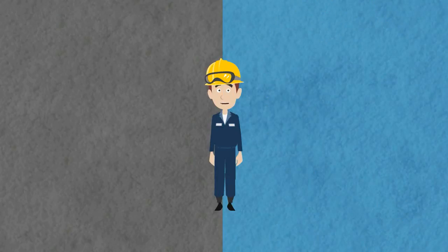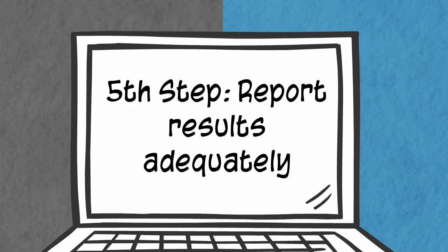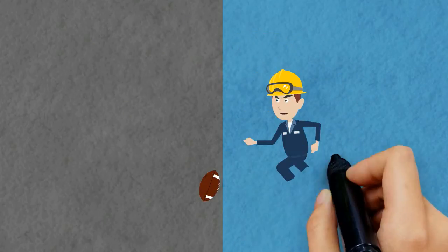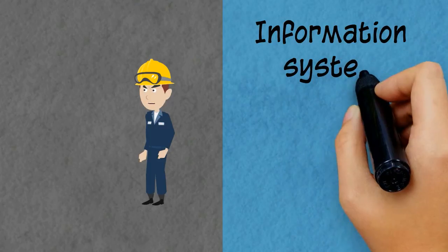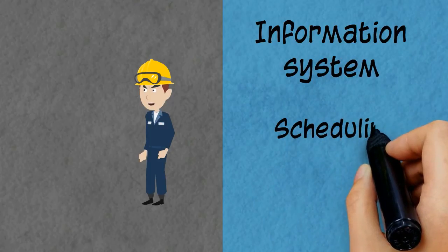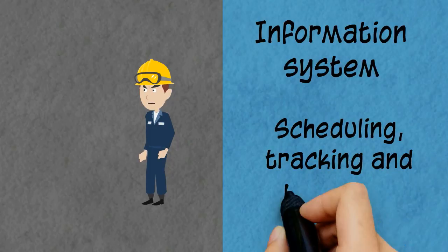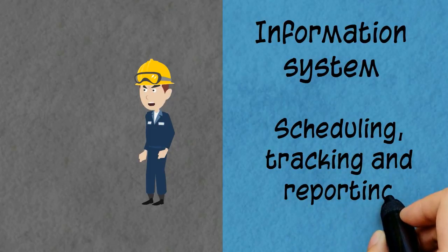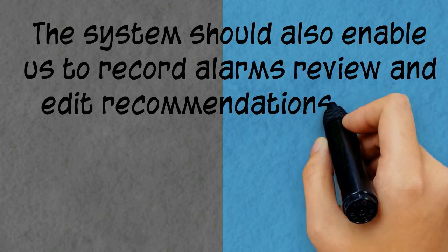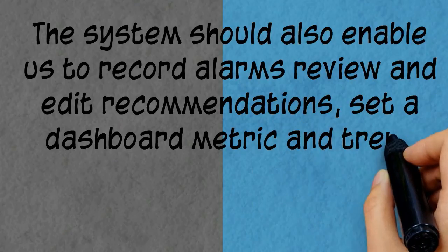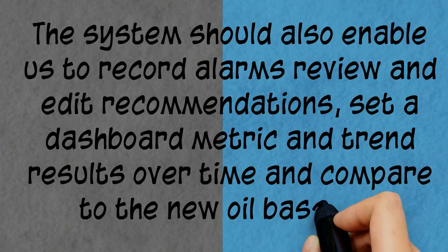Fifth and final step: report results adequately. To support a successful oil analysis program, it is strongly recommended to use an information system that enables automation of oil sampling scheduling, keeps track of sampling execution and timely dispatch to the lab, records alarms, reviews and edits recommendations, sets dashboard metrics, trends results over time, and compares results to the new oil baseline.